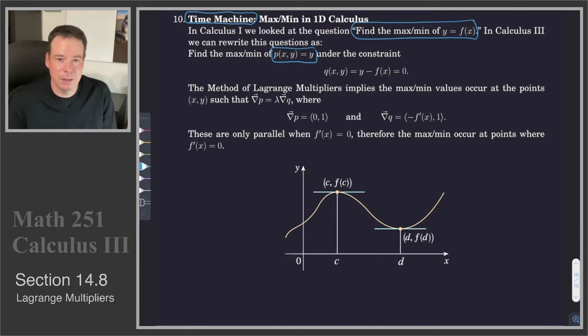That is, we want to find the maximum or minimum value of p. But we only want to do that for points that live on the graph, y equals f of x. So that's our constraint, y equals f of x, or y minus f of x is 0. And if we write it this way, then that can be our constraint function, y minus f of x.